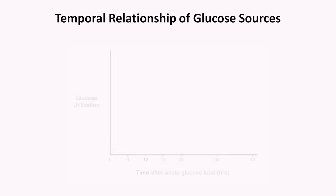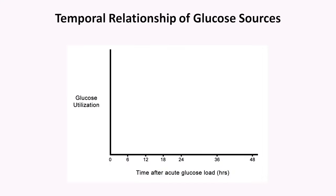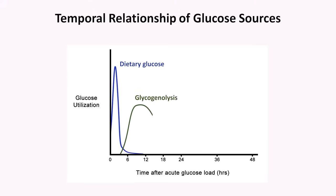The final topic to discuss is the temporal relationship of glucose sources — that is, where does the glucose come from that is utilized by tissues in the hours and days following ingestion of food. In the first several hours after a meal, when the patient is in the well-fed state, the effects of insulin predominate and almost all peripheral glucose utilization draws from dietary glucose. However, after approximately 4-6 hours, that dietary glucose has been removed from the bloodstream and the body's metabolism enters the fasting state. Insulin levels are diminished and glucagon increases, resulting in glycogenolysis, which provides the body glucose for the next half day or so. At this point, glycogen stores are gone and metabolism enters starvation mode.